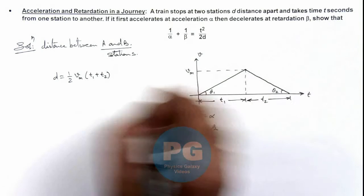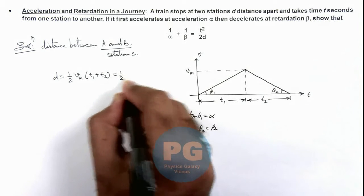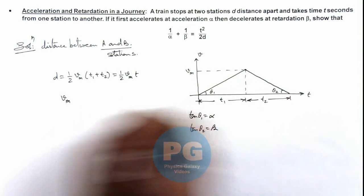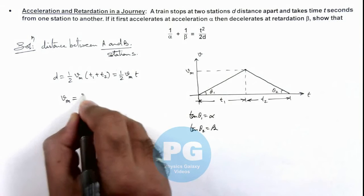This is already given as t, so this can be written as half vₘt. This gives us the maximum speed of the train in the journey, which is vₘ = 2d/t.